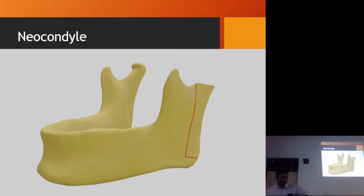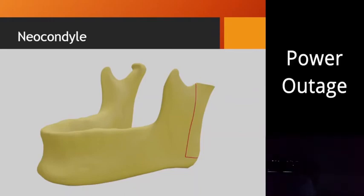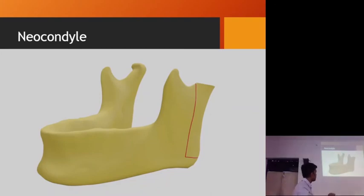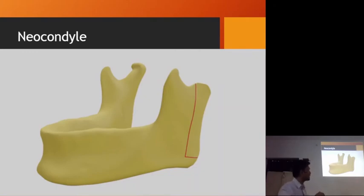Then we have neocondyle formation. For example, in TMJ ankylosis management — gap arthroplasty — we cut the condyle and create a gap. After managing the ankylosis, we keep a vertical cut parallel to the posterior border of the ramus with a 90-degree horizontal component. We then distract this segment upward. We should round off the segment before starting the distraction procedure. After distraction, a new condyle is regenerated.